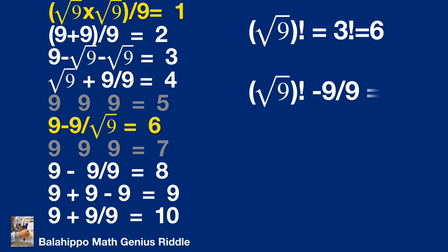So square root of 9 factorial minus 9 over 9 equals 5. Square root of 9 factorial plus 9 over 9 equals 7.